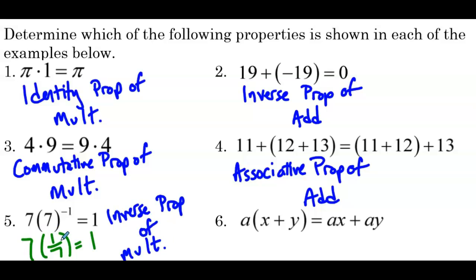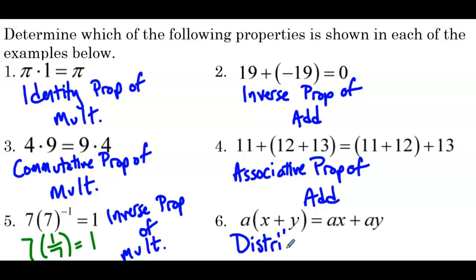So number 5 is going to be the inverse property of multiplication — we're multiplying two values and we get the multiplicative identity. Number 6: A times the quantity x plus y is equal to Ax plus Ay. We can see here they distributed the A across that sum, so this is going to be the distributive property.